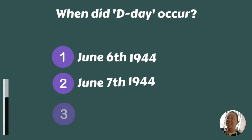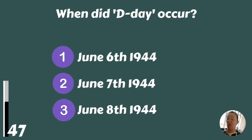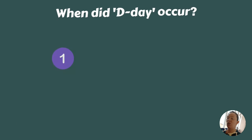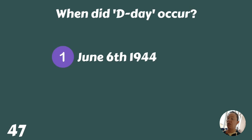When did D-Day occur — June the 6th 1944, June the 7th 1944, or June the 8th 1944? June the 6th, 1944.